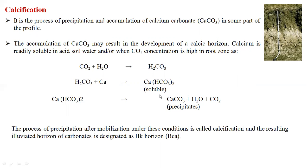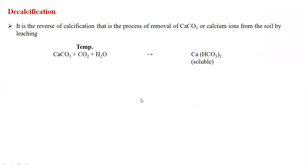This precipitation forms a layer which gives a white color appearance in the profile. After mobilization, the resulting accumulation of carbonates is called calcification, and this horizon is designated as the Bk horizon.